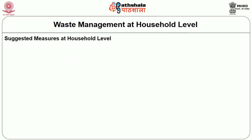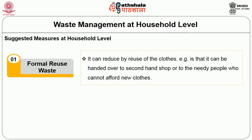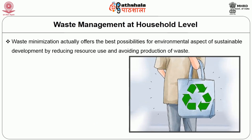Suggested measures at household level include formal reuse — reducing waste by reusing clothes, for example handing them over to second-hand shops or to people who cannot afford new clothes. Semi-formal reuse includes selling on websites, children inheriting clothes from siblings and friends, sharing clothes, and making new products by reusing discarded fabric or clothes. Waste minimization offers the best possibilities for environmental aspects of sustainable development by reducing resource use and avoiding production of waste.